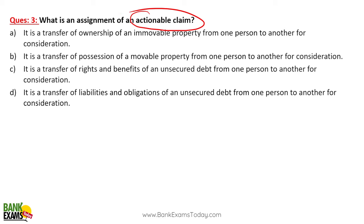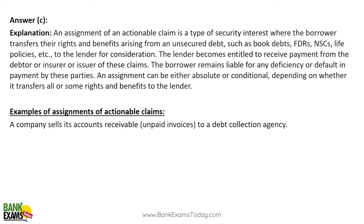Assignment of actionable claim: when you borrow money from a bank, the bank has an actionable claim against you. If you don't pay, the bank can come after you. However, the bank can also sell that actionable claim to a third party — this is a transfer of rights of an unsecured debt from one person to another. A company sells its accounts receivable to a debt collection agency. Banks and NBFCs do this frequently — if you took a loan and are not paying it back, those loans can be sold to debt collection agencies who then recover the money.